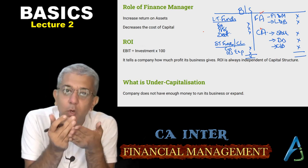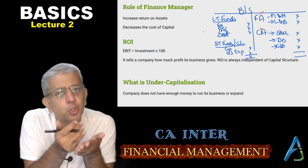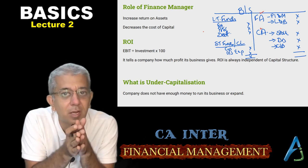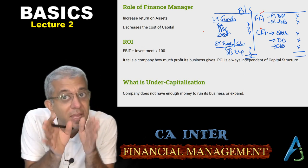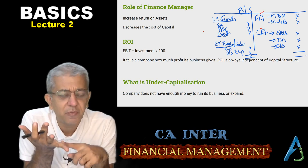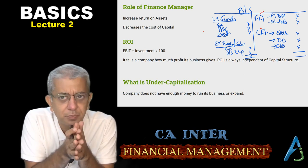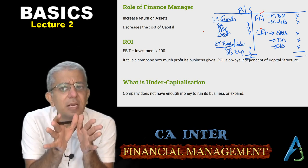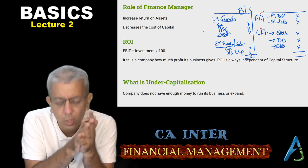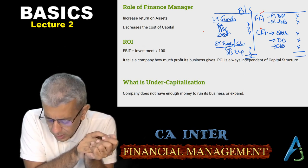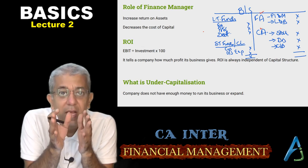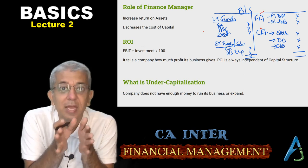From the liability side, we have funds in two parts: long-term funds and short-term funds. Long-term funds are those which will remain with the company for a very long period — you have equity, preference, and debt. Short-term funds mean current liabilities: your creditors, outstanding expenses, and so on.